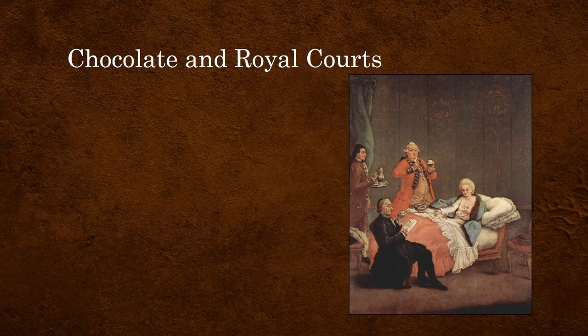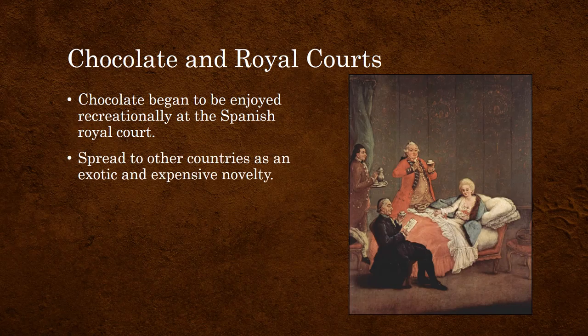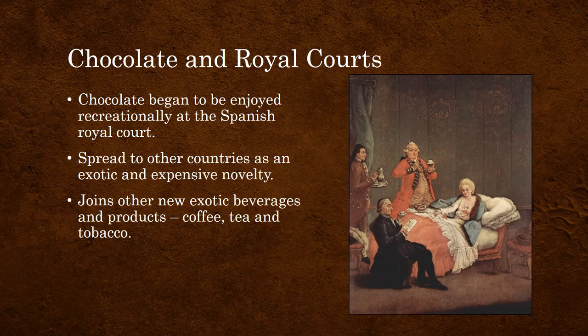Very quickly these beverages began to be used outside of medicinal purposes and became fashionable, recreational beverages as well. Chocolate begins to be associated recreationally at the Spanish court during the 17th century. More so than coffee or tea, chocolate began to become associated with the rich, upper-class nobility of the courts of Europe. Over time it spread to other countries as an exotic and expensive novelty, and its spread was almost entirely amongst the wealthiest and most powerful people in Europe. In doing so, it joins other exotic beverages and products — coffee, tea, and tobacco.